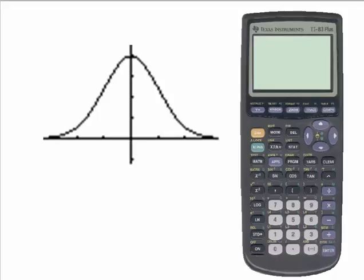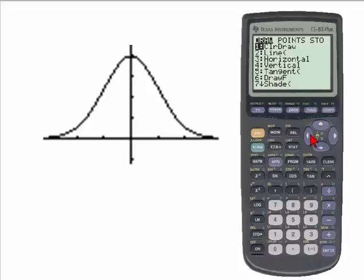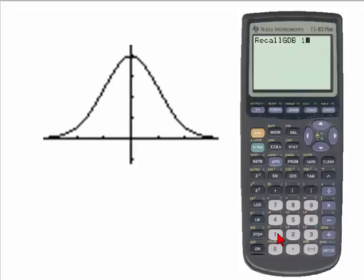If you want to retrieve this graph, we will go to the Draw button again, over the Program key. Go to the Store menu, select number 4, Recall Graph Database, specifically Graph Database number 1, and hit Enter, and it says Done, which means when we look at the window, the window will have returned to the window used to graph the normal curve.